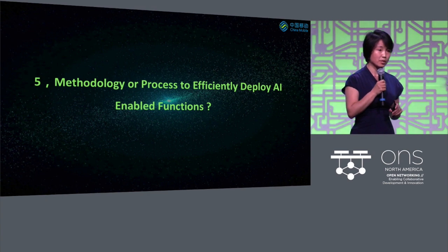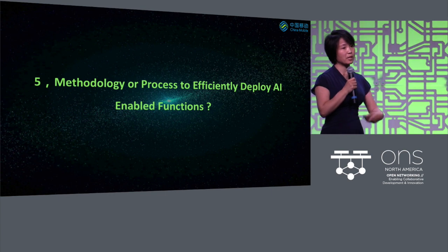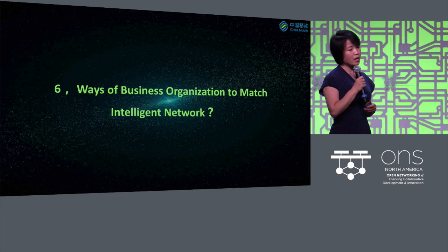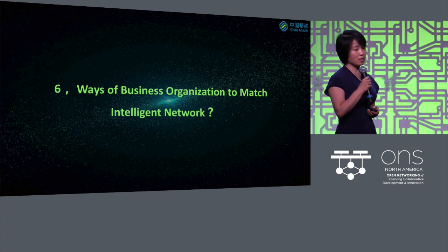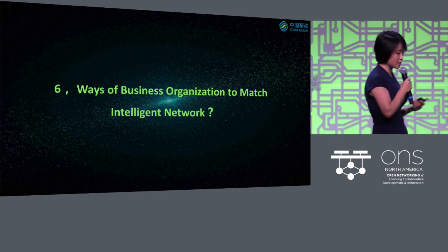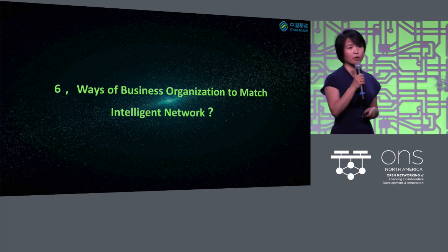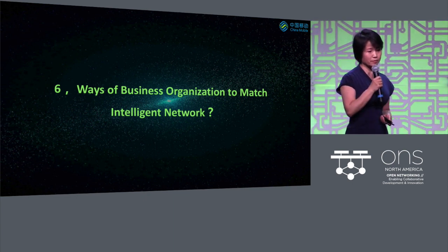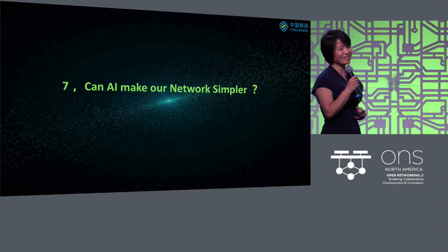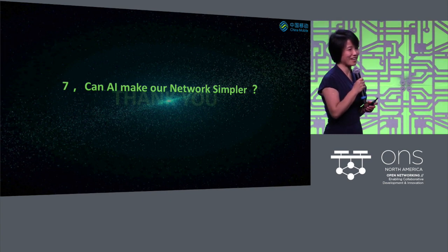It's not only the algorithm or the data — your business process has to close that loop to give the system life. A sixth point: the way of business and organization has to match this new technology. Every piece of technology, especially AI, will transform the way we think and the way we organize our people. And lastly, I hope our networks can become simpler, and I hope AI will help there. That's all my content — thank you.